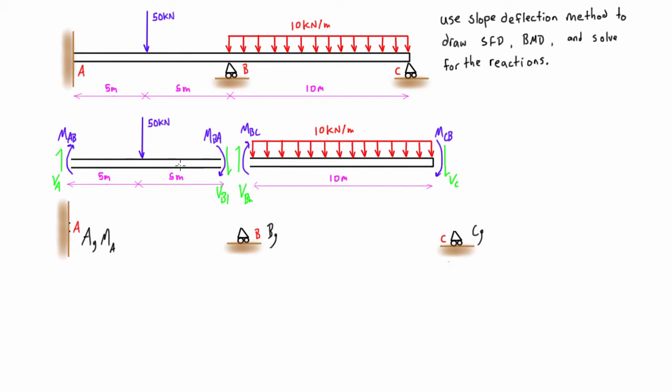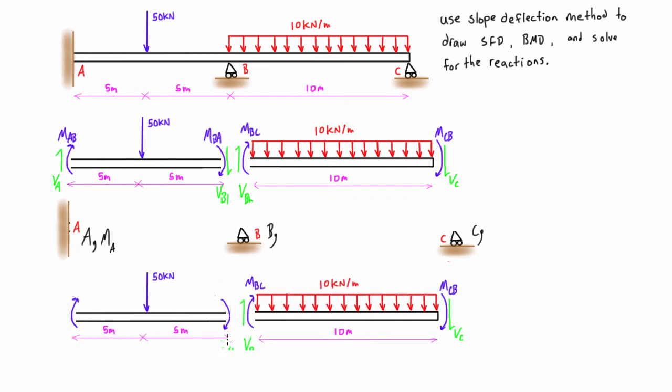So the next thing that we do now is we redraw these same spans as if they had fixed ends. So this is just a hypothetical case, but for a beam that has this exact same geometry.